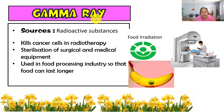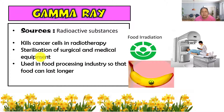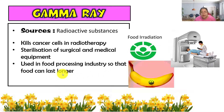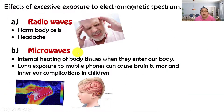The last one is gamma ray, which comes from radioactive substances. Applications include killing cancer cells in radiotherapy, sterilization of surgical and medical equipment, and use in food irradiation — you can see the food radiation logo, which means the food can stay for a longer time.